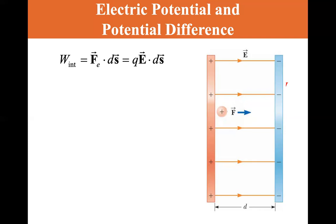So work is equal to the electric force dot ds, which is qE dot ds. The work is equal to the change in potential energy. So dU is equal to the minus work internal, which is equal to minus qE dot ds. So delta U, the change in potential energy, the change in electrical potential is equal to minus q the integral of A to B of E dot ds.